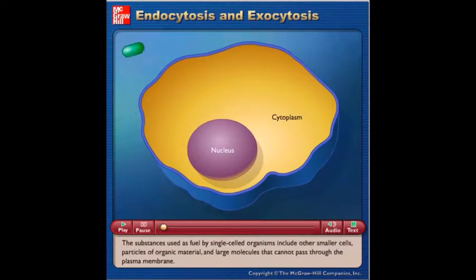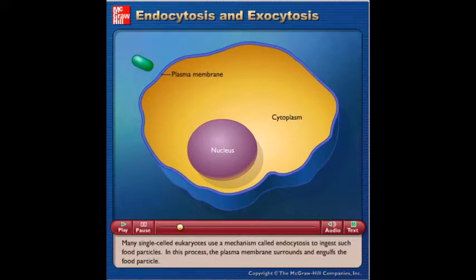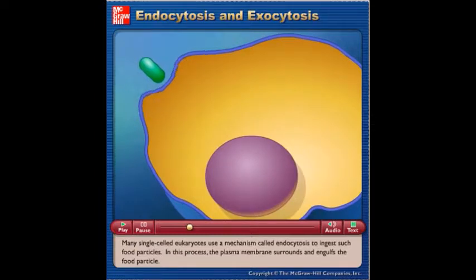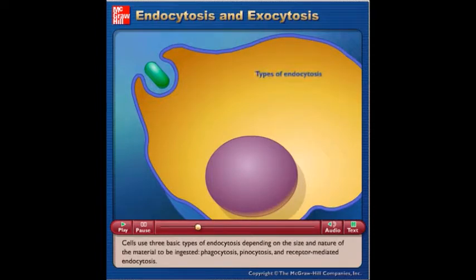The substances used as fuel by single-celled organisms include other smaller cells, particles of organic material, and large molecules that cannot pass through the plasma membrane. Many single-celled eukaryotes use a mechanism called endocytosis to ingest such food particles. In this process, the plasma membrane surrounds and engulfs the food particle. Cells use three basic types of endocytosis depending on the size and nature of the material to be ingested.